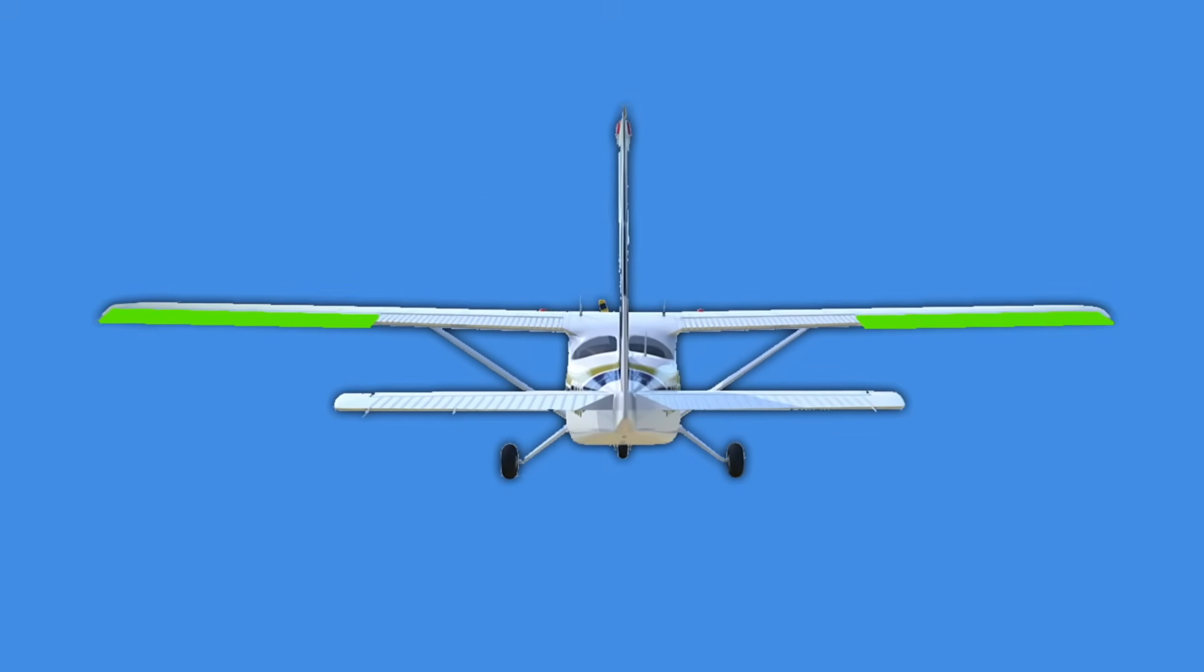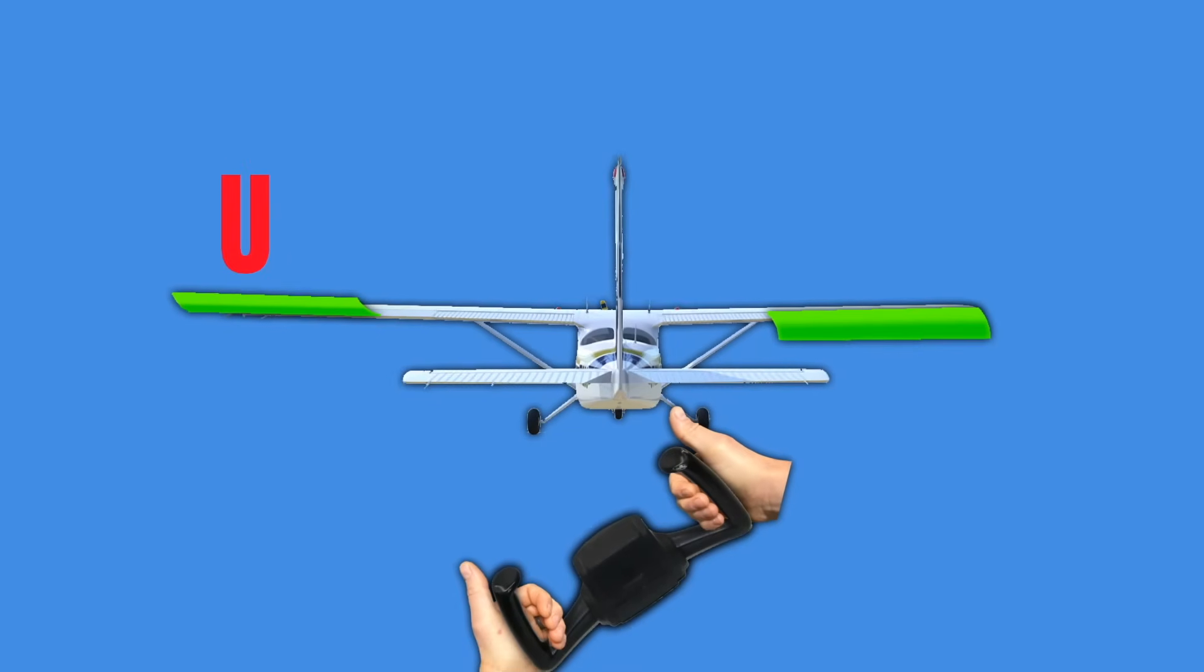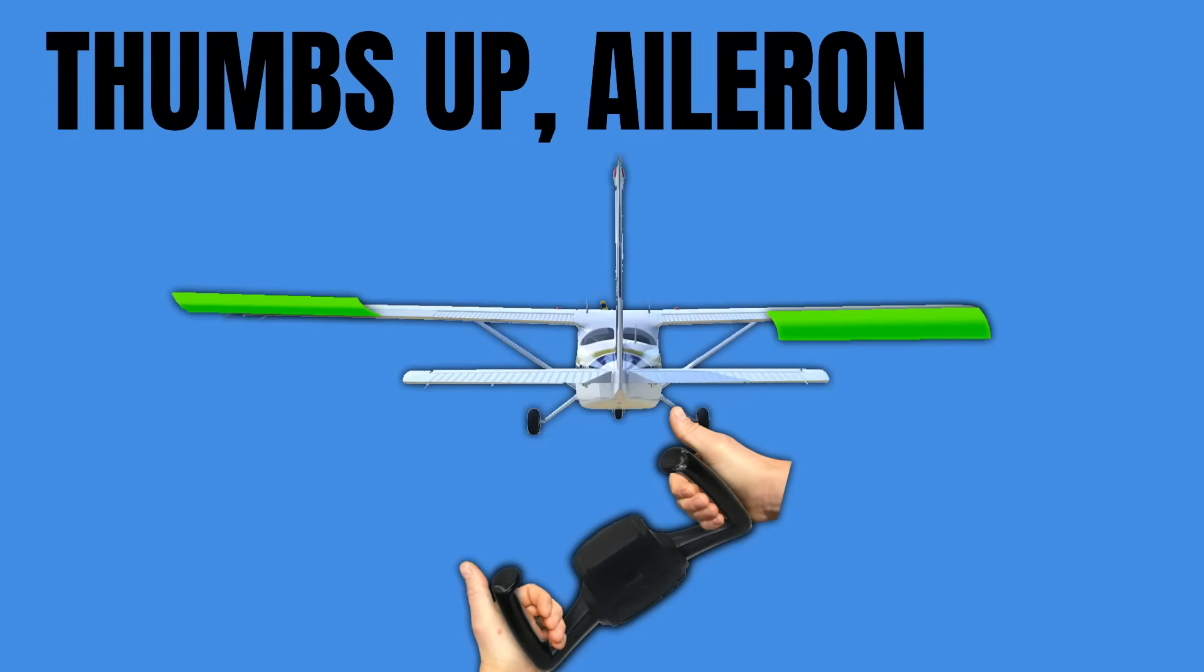Now you may remember that our ailerons are tied together and they're connected in such a way that when we raise one aileron the other aileron lowers. And if you're wondering why my weird little hands have my thumb sticking up this is an easy way to remember which aileron comes up when you rotate the yoke. All you have to do is remember thumbs up ailerons up.